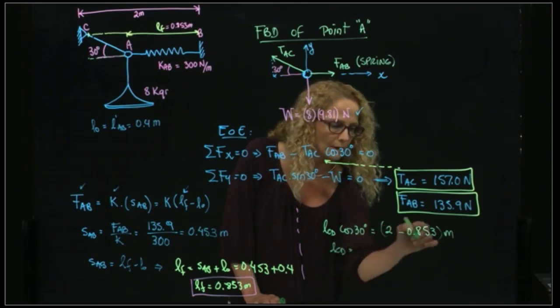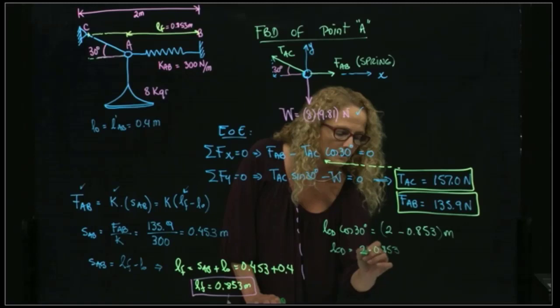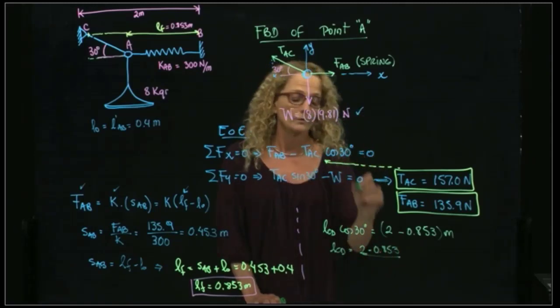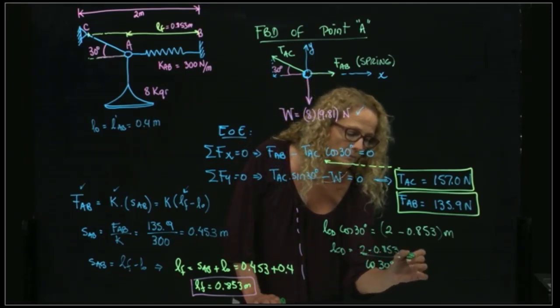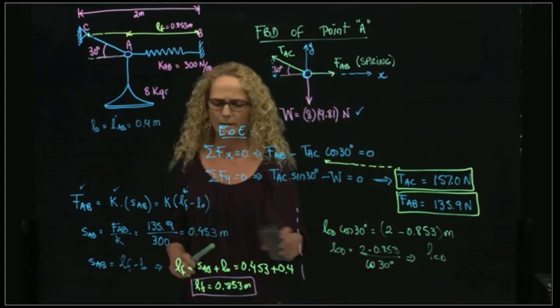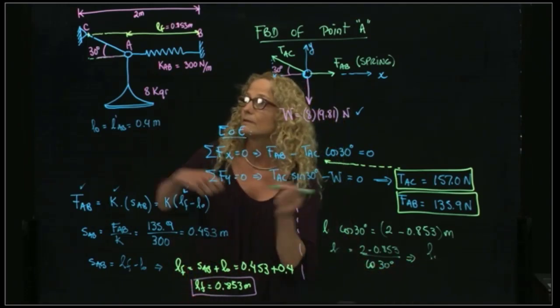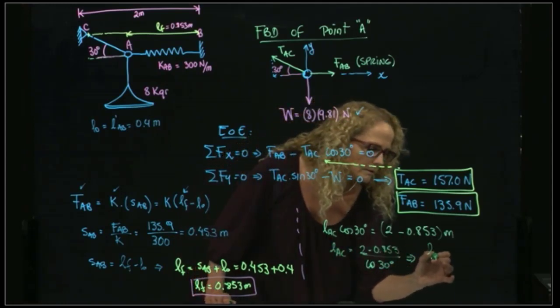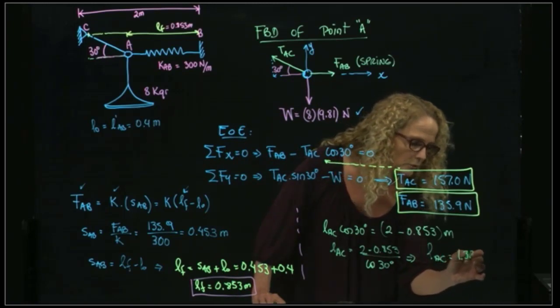Therefore, LAC will be equal to this value over here divided by cosine of 30. And we know that cosine of 30 is square root of 3 over 2. You can do it also with your calculator. Finally, this is AC. AC will be equal to, I have it here, 1.32 meters.